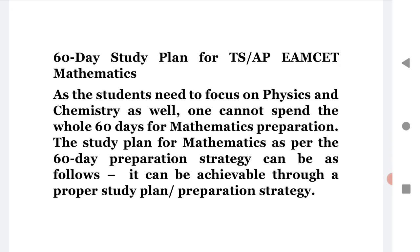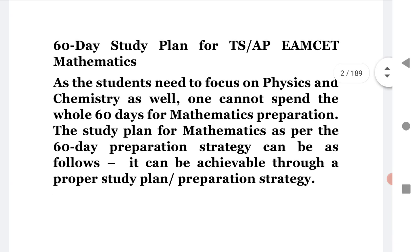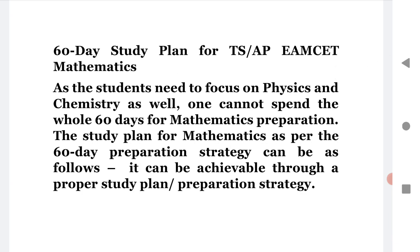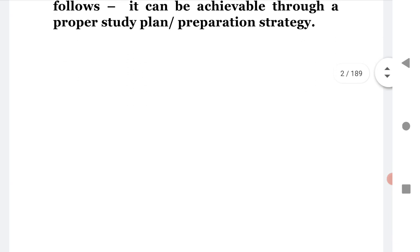Here is the 60-day study plan for TS and AP AMSET for mathematics. Since students need to focus on physics and chemistry as well, one cannot spend the whole 60 days on mathematics alone. The study plan for mathematics across 60 days is achievable through proper preparation strategies. The questions asked in TS or AP AMSET cover the complete first year and second year syllabus with a 30% reduction. The syllabus PDF for 2021 is already available on our channel.